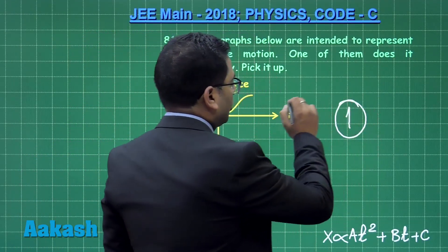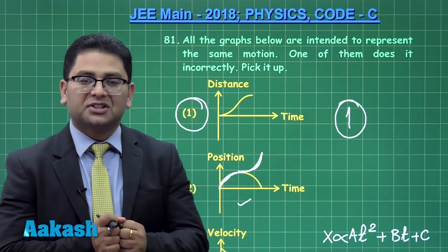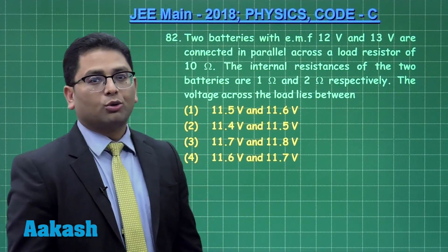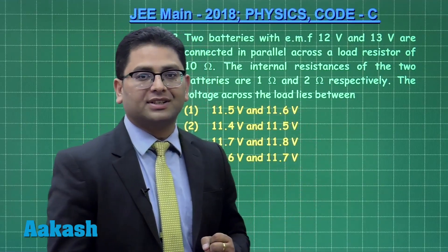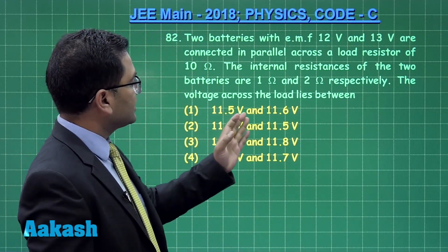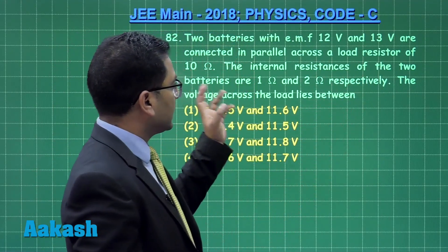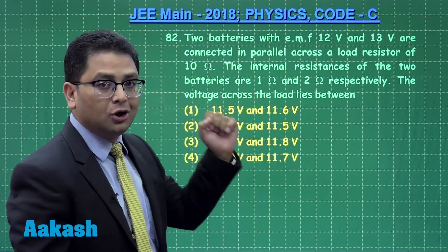So the solution for question number 81 is option number one. That was more an experience-based and a wholesome solving. Let's go to question number 82. Question number 82 is taken from the topic current electricity.